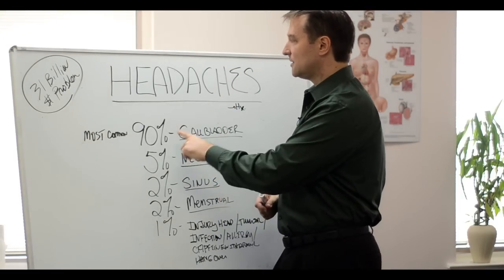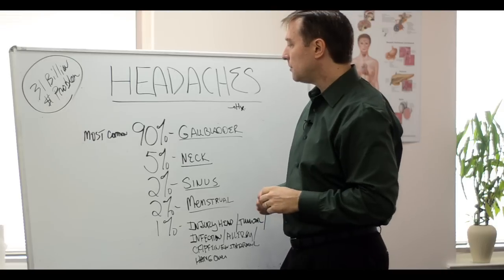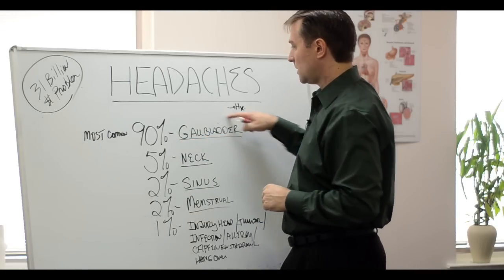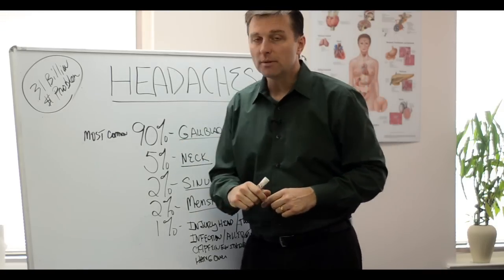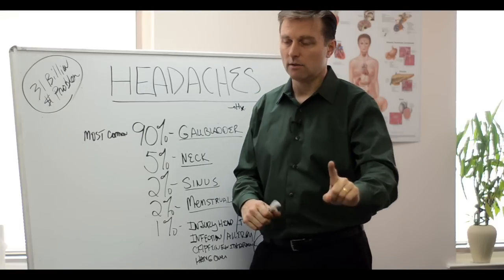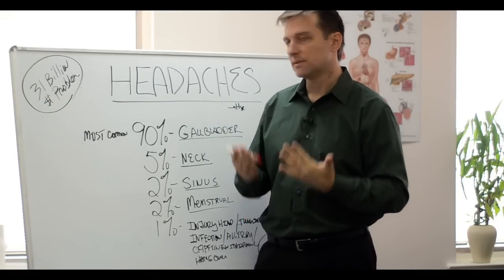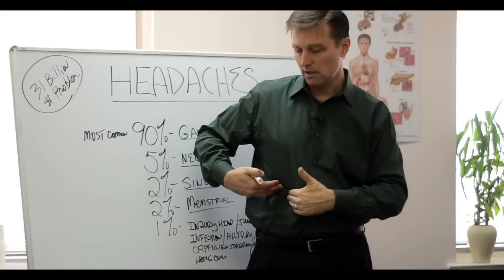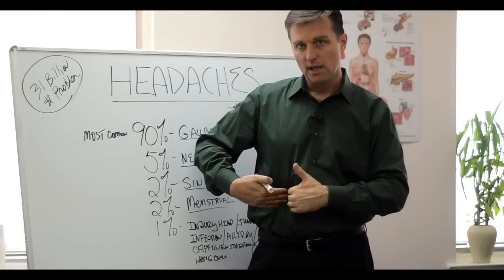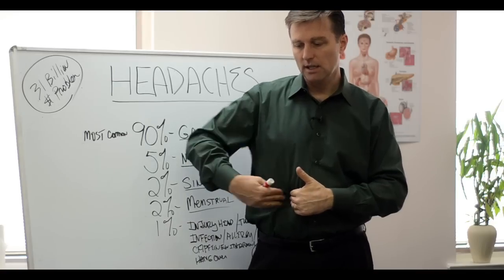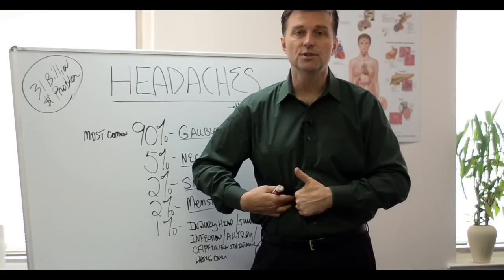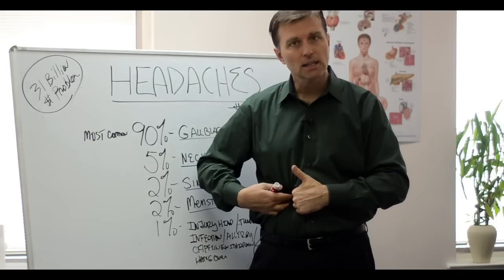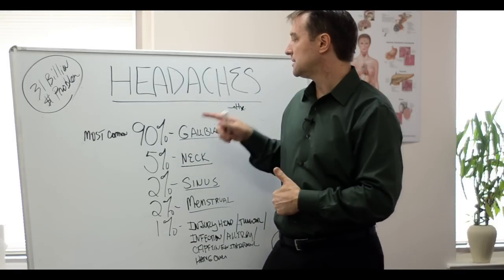But 90% of all headaches are coming from the gallbladder. If you don't believe me and you have a headache right now, all you have to do is take your hands and press over the gallbladder, which is right down here underneath the right rib cage, and just press in at this angle and hold this for two minutes. If your headaches clear up, then we know it's gallbladder.